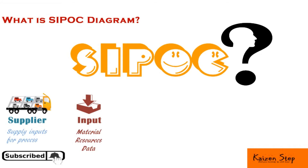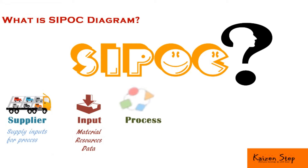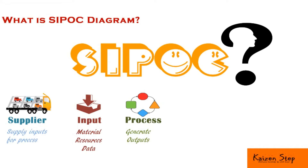The third letter is P, which stands for Process. A process is defined as a collection of activities that creates one or more outputs with value to the customer.